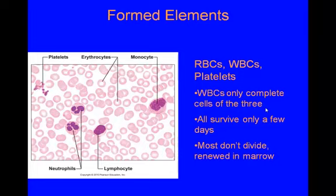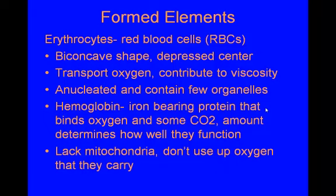Erythrocytes — red blood cells — have a biconcave shape and a depressed center. That awkward shape helps them bend and squeeze through tight spaces. The depressed center increases surface area, which means more hemoglobin can be carried; hemoglobin carries oxygen, so the more hemoglobin, the more oxygen, making the red blood cell as efficient as possible. Their major function is to transport oxygen and contribute to the viscosity of the bloodstream. Increasing red blood cells makes blood thicker and harder to push; decreasing them makes it thinner.